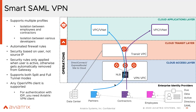We also provide a client that we developed. You should use that client if you want to authenticate through an IDP, because it has everything built in — the SAML and everything. But if you don't have that requirement, you can use any OpenVPN-supported client. It's very simple, seamless, and easy to deploy.